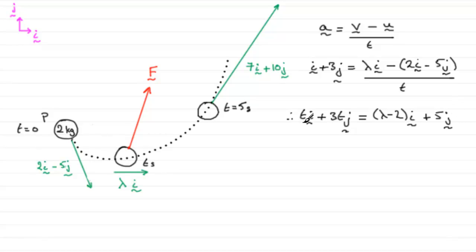Now, when you have two vectors that are equal to one another, it means that the components must be exactly the same. So in other words, t here must match up with the lambda minus 2. And the 3t for the j component must match up with the 5 here.